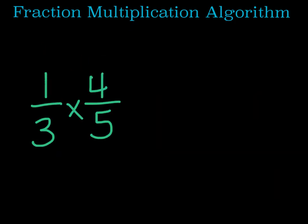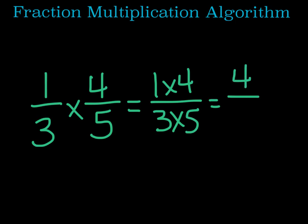Let's look at one more example. 1 third times 4 fifths. This equals 1 times 4 over 3 times 5. 1 times 4 is the same thing as 4 and 3 times 5 is the same thing as 15. Neither 4 nor 15 have any matching factors, so this is the smallest possible form that this fraction can be in. The answer to 1 third times 4 fifths is 4 fifteenths.